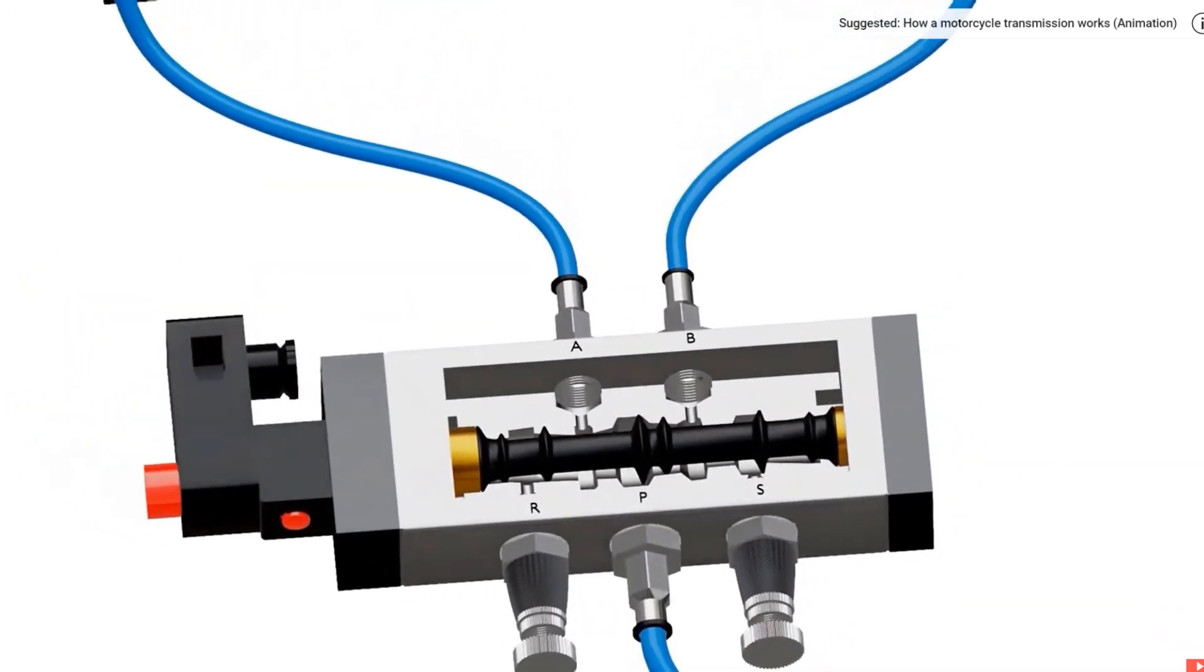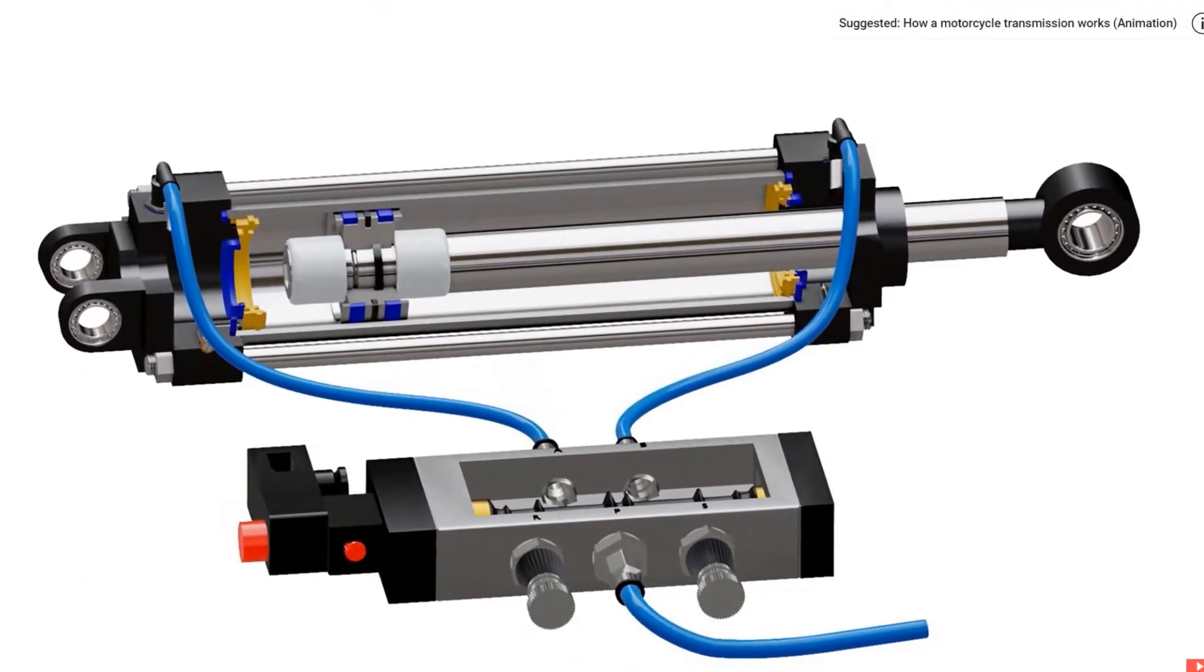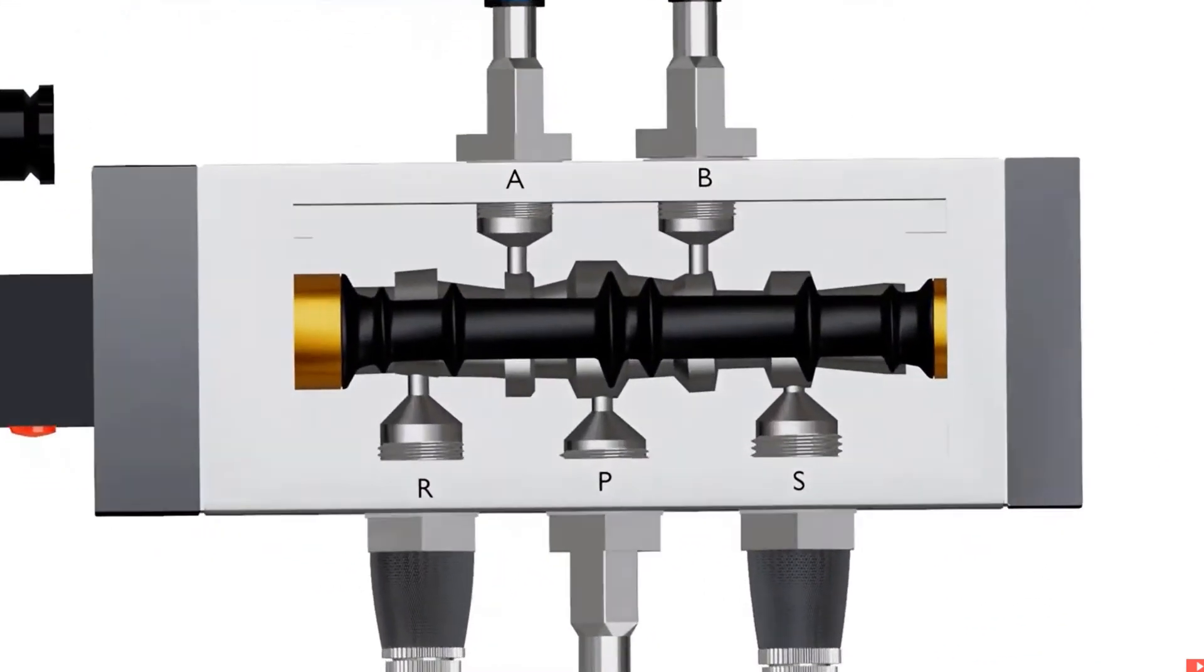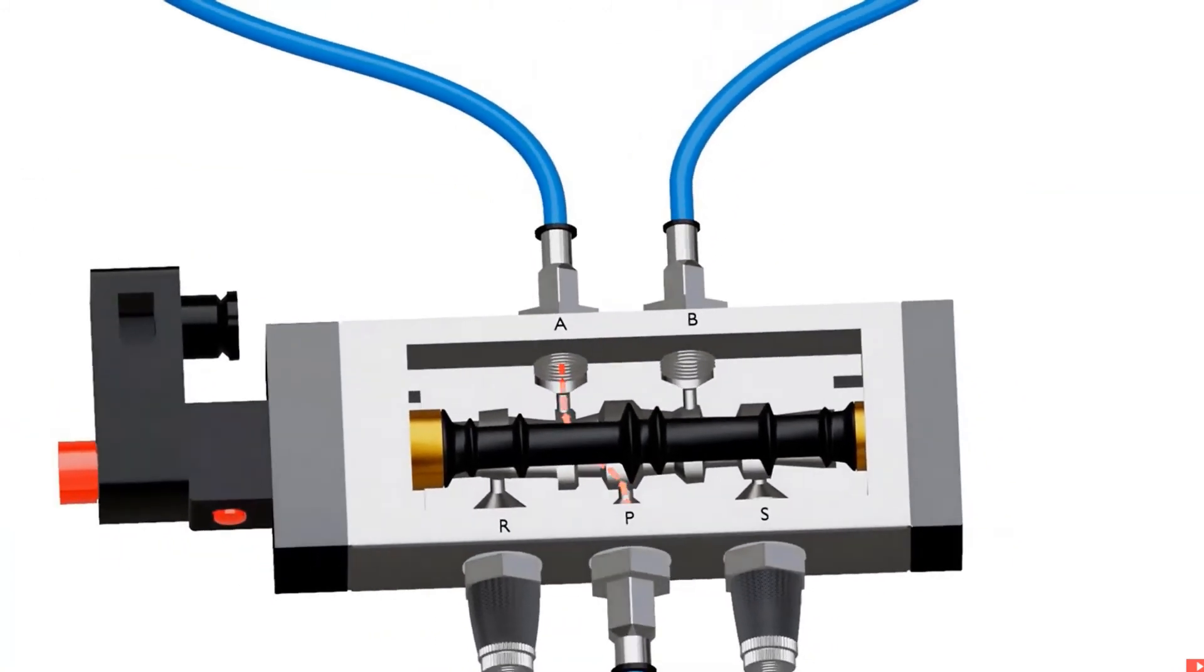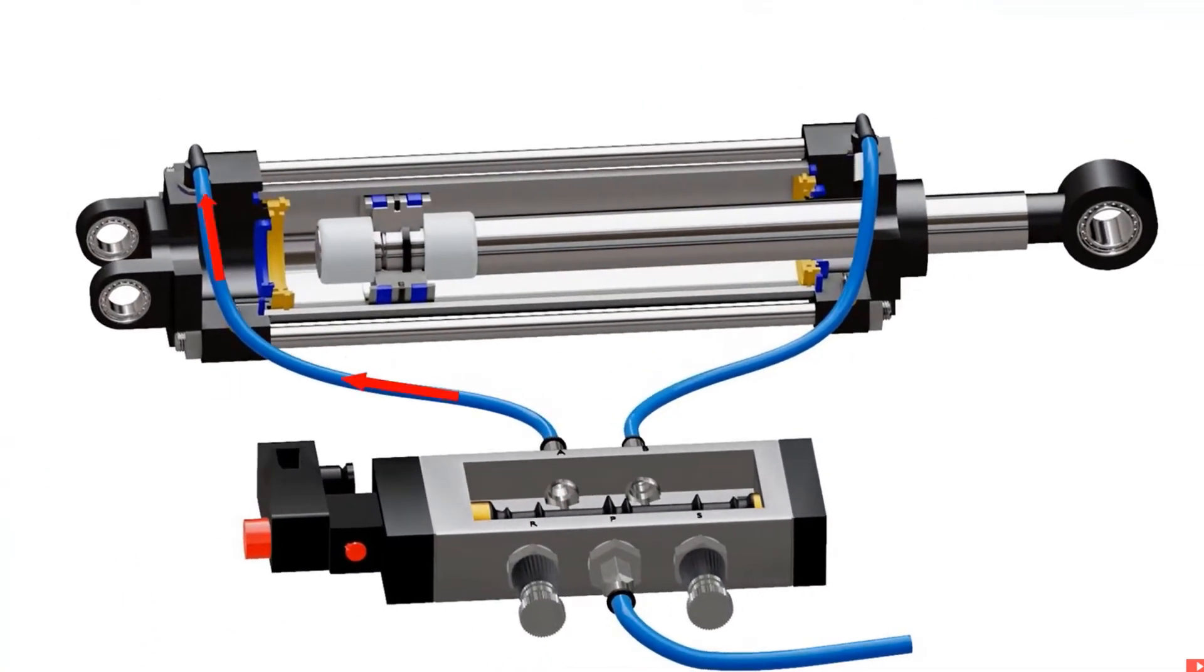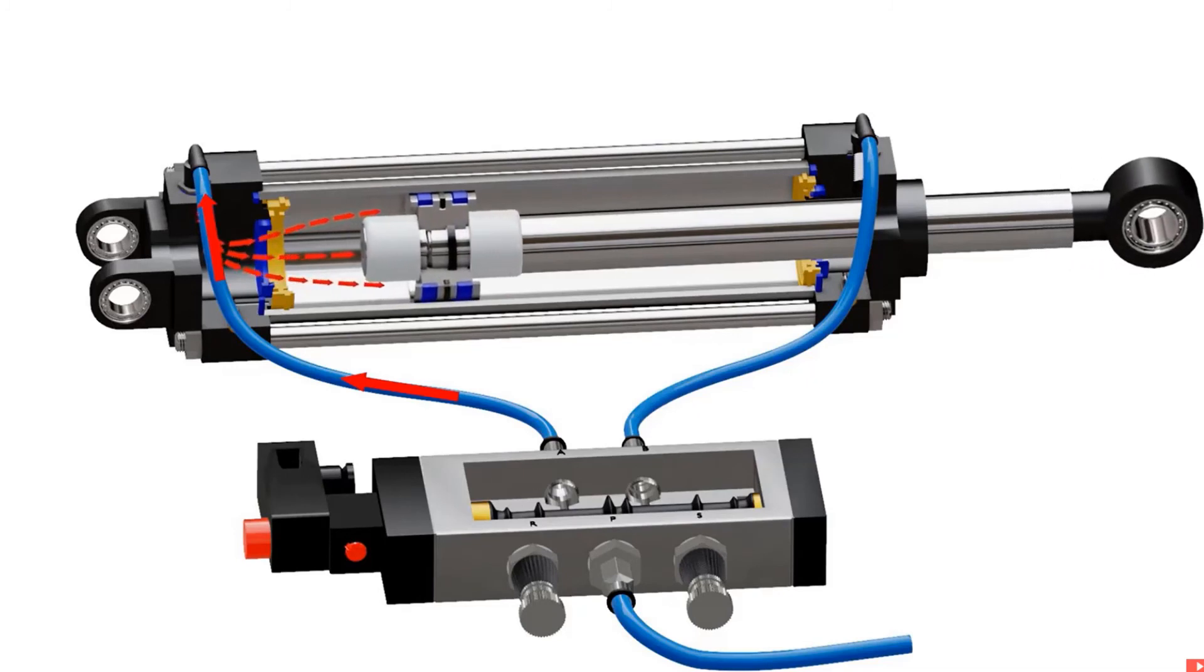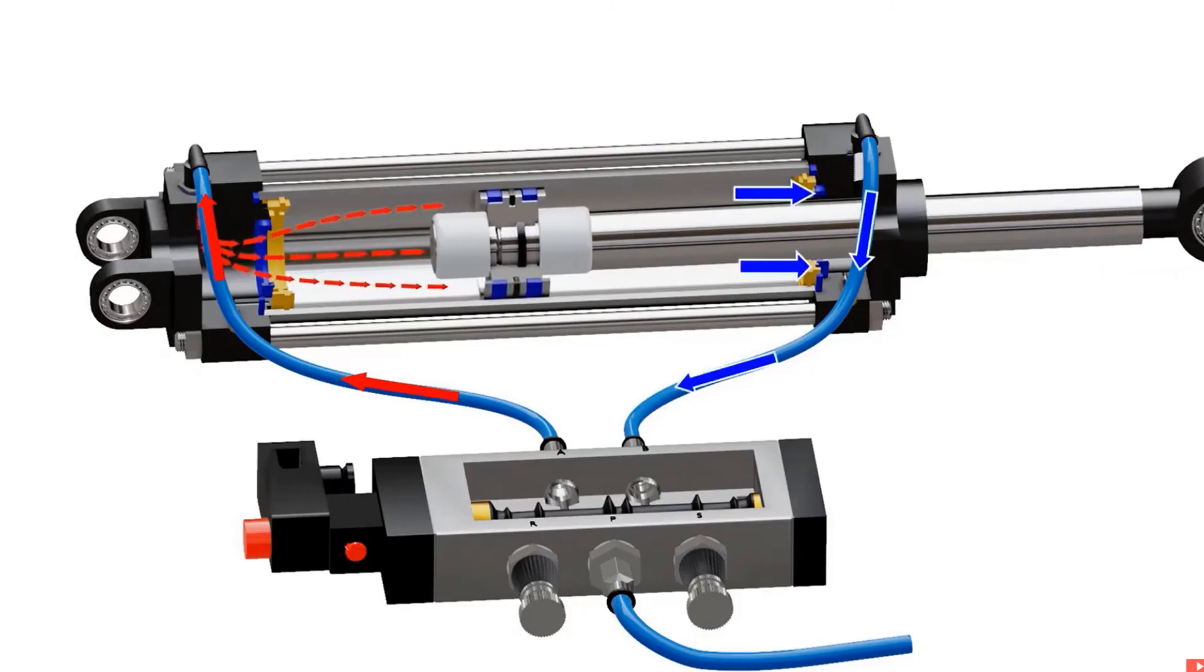Now let's understand how a pneumatic cylinder works. The compressed air is supplied through inlet port P of the valve. The valve directs air to a particular direction which we can observe in the animation. In this case, the air is directed to port A. This high pressure gas is then transferred to the cap end of cylinder through the pneumatic hose. This creates high pressure in the cap end of cylinder which therefore pushes the piston towards the head end. This also pushes gas from the head end.